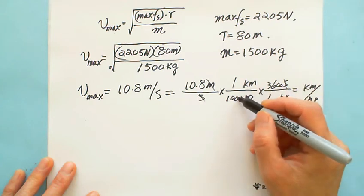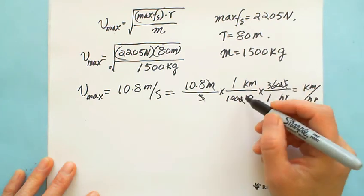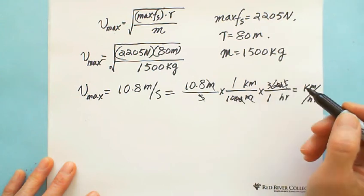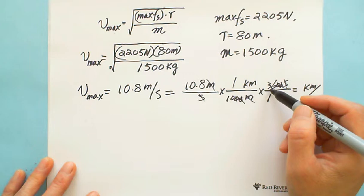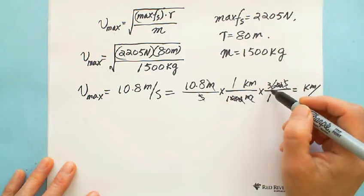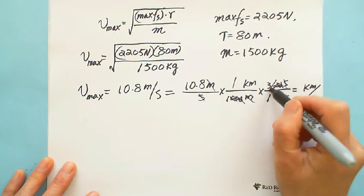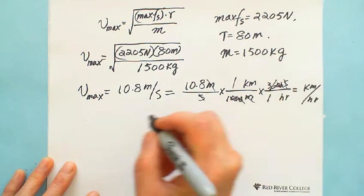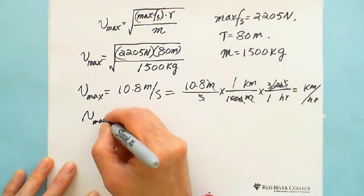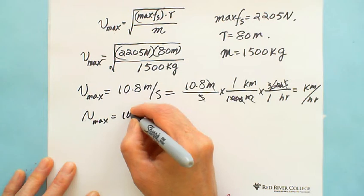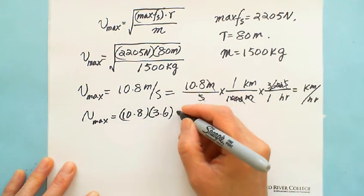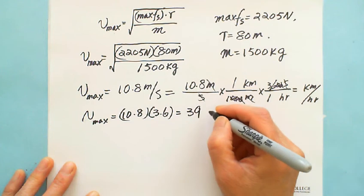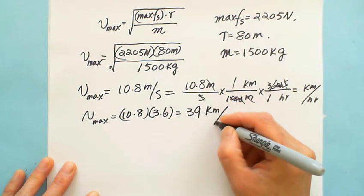In that situation, cancel this zero, cancel this zero. So actually this 10, it will make 3.6, right? This one is 3.6. That's why 10.8 multiplied by 3.6, we got 10.8 multiplied by 3.6, we got 39 km/h.